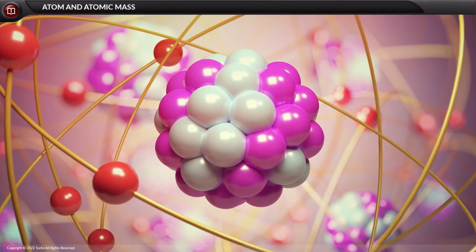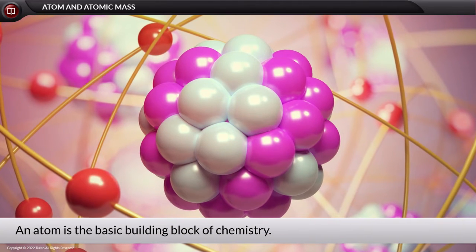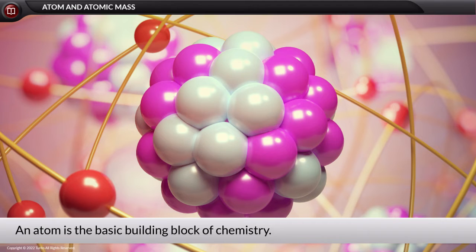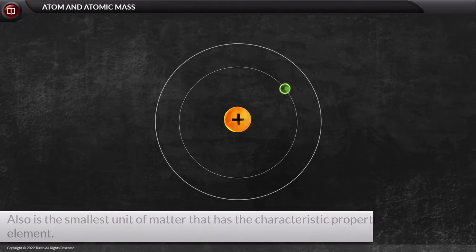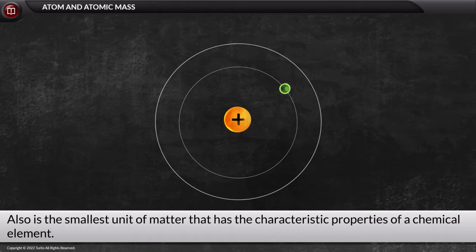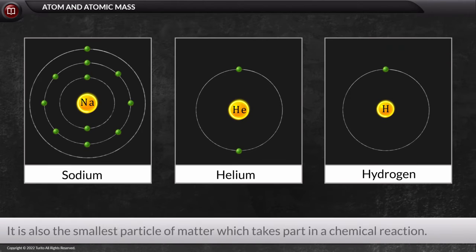Hello students, today we will learn about atoms. An atom is the basic building block of chemistry. It is the smallest unit into which matter can be divided without releasing electrically charged particles. It is also the smallest unit of matter that has the characteristic properties of a chemical element — for example, Na, He, and H. It is also the smallest particle of matter which takes part in a chemical reaction.